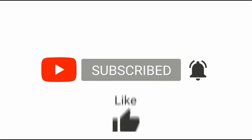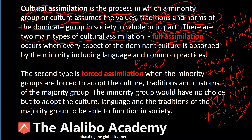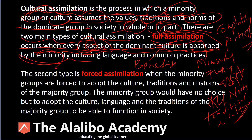Full assimilation comes with benefits — benefits of employment, being part of society, being able to socialize — so there are social and economic benefits. Full assimilation occurs when every aspect of the dominant culture is absorbed by the minority, including language and common practices. For example, if the dominant culture is celebrating a holiday, they celebrate it as well, embrace it, learn more about it, and pass that new tradition on to the next generation.